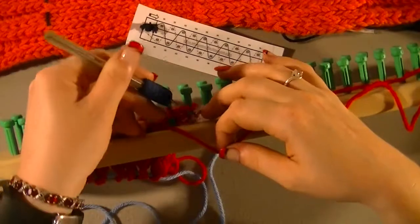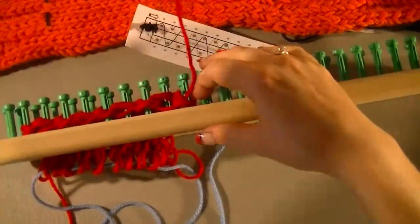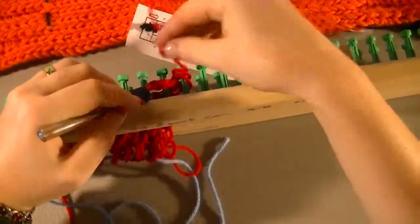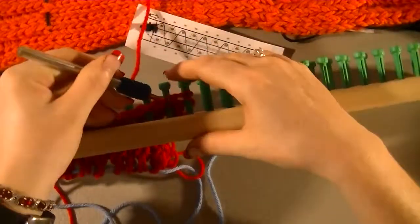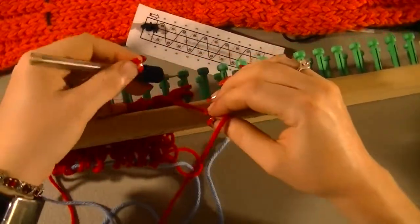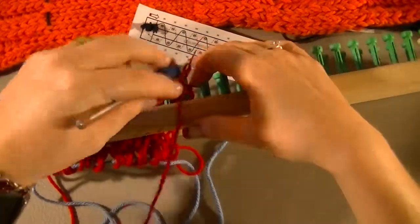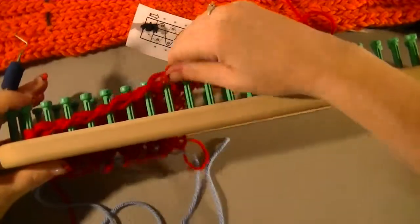Go back one peg until your last peg, take the yarn up through just like you've been doing and go back one peg, take the yarn down and then that last peg take the yarn up again just so that the working yarn is at the end.